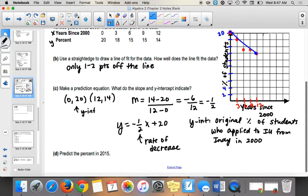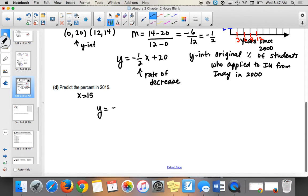And then predict the percent in 2015. So in 2015, what would you plug in for x? 15, right? So we're going to plug in 15 into our prediction equation. So I get negative 1 half times 15 plus 20. So negative 7.5 plus 20 is 12.5. So we would predict that there were 12.5% of Indianapolis students applied to IU. Does that make sense? So you find two points, create a prediction equation, and then make a guess based on that.